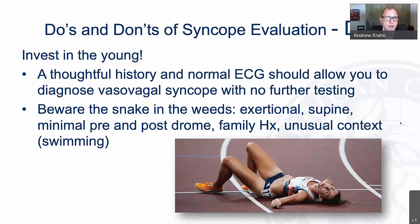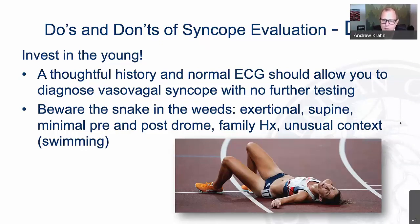Examples include long QT syndrome, Brugada, or latent cardiomyopathy such as ARVC. Red flags include syncope during exertion, syncope without a prodrome, syncope in the supine or recumbent position, anyone with a family history of sudden death before age 50, or unusual context — such as an alarm clock going off or syncope while swimming in calm waters. These are key clues, particularly in the young.